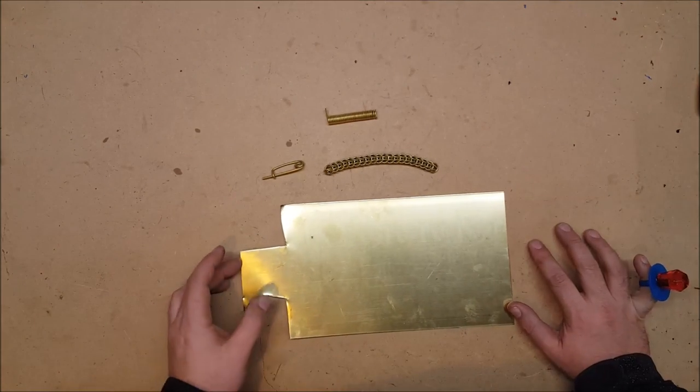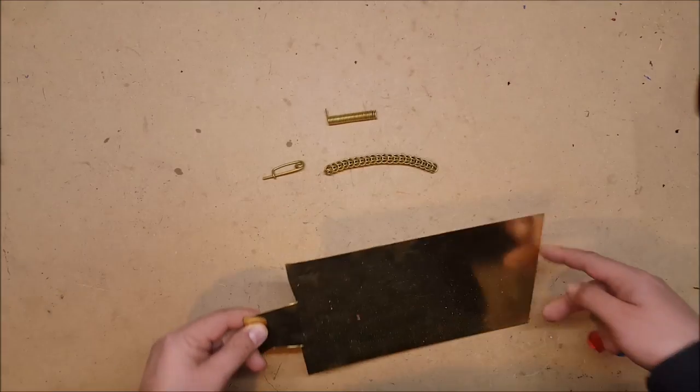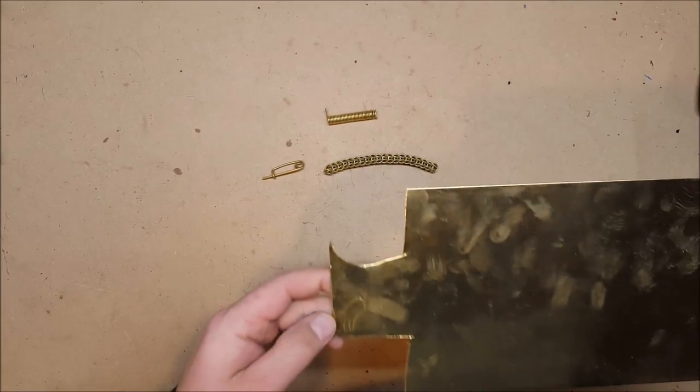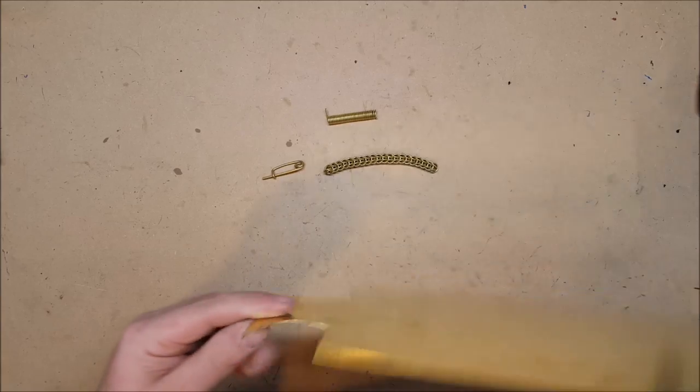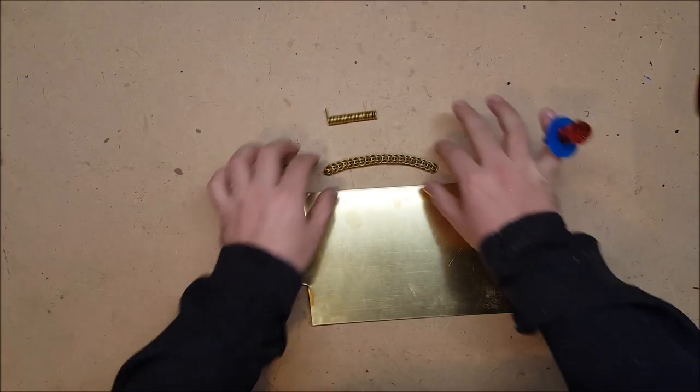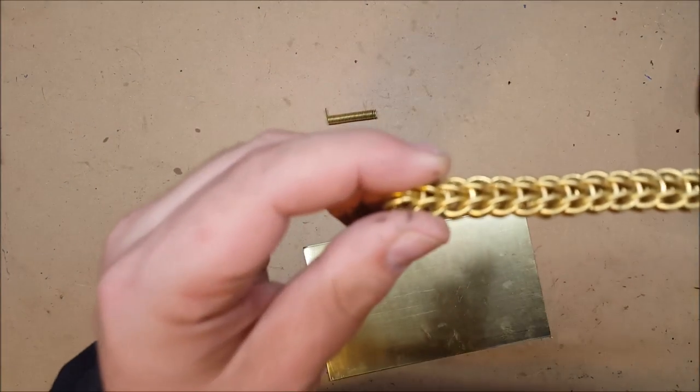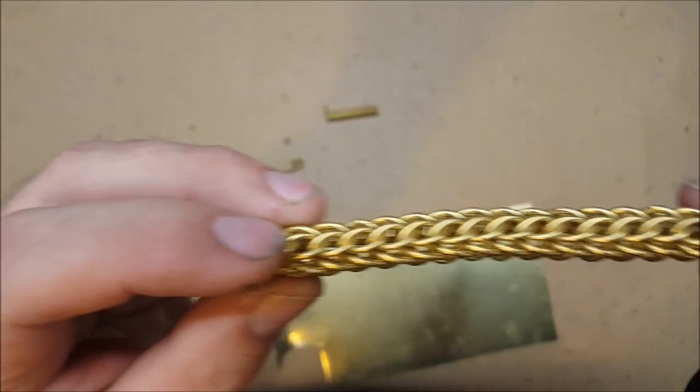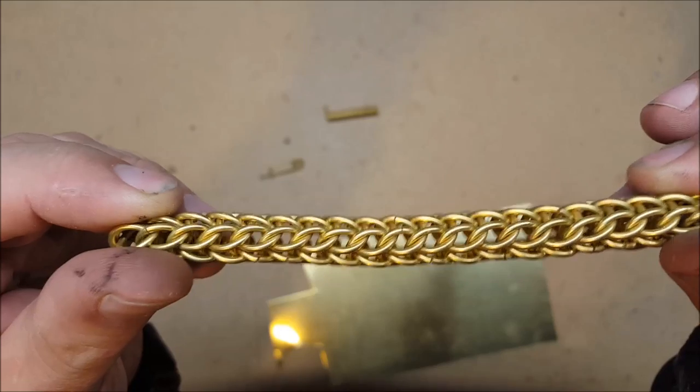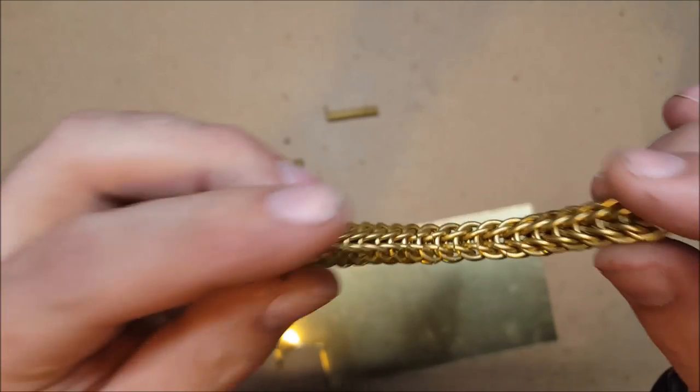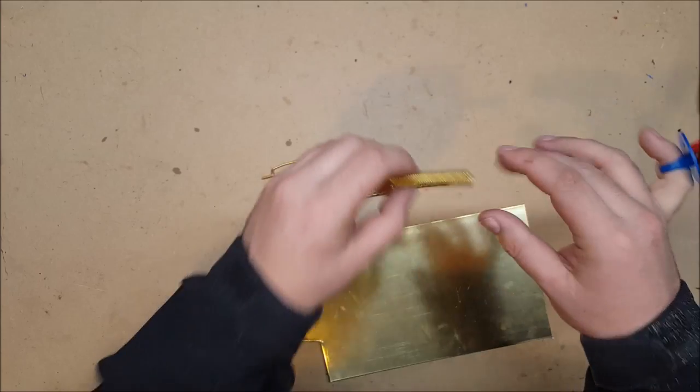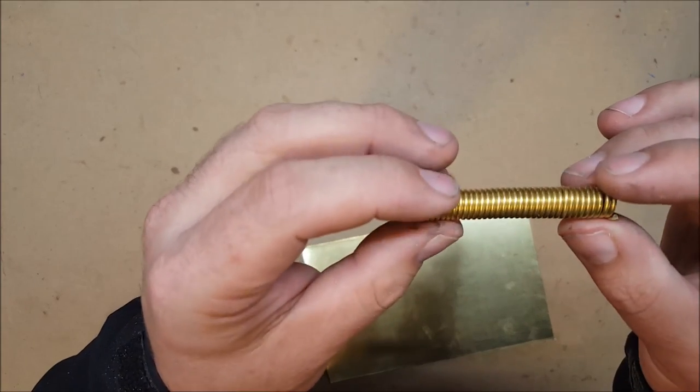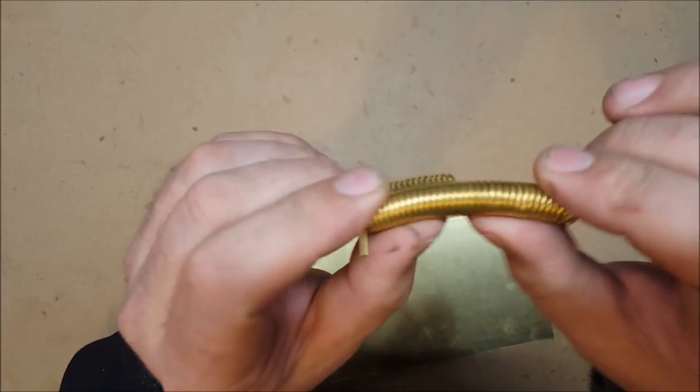I've never done any brass etching before, so yesterday I experimented with that. The chain is made out of 1/16th inch brass, 16 gauge brass that I bought at Hobby Town. I've got a jig that allows me to take a brass rod and wrap it around into a coil, basically a spring.